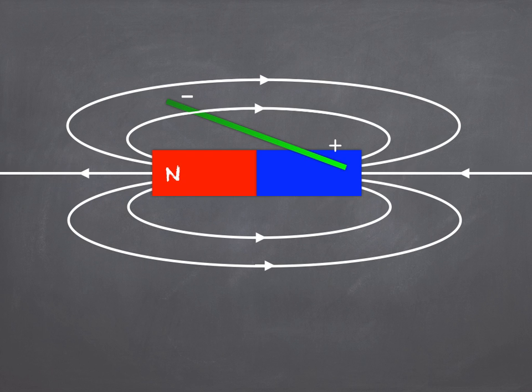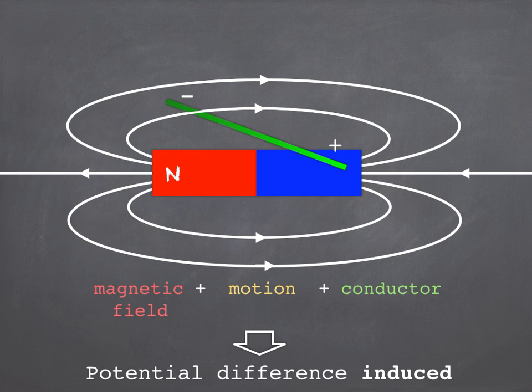So if you put together a magnetic field, movement or motion, and a conductor, then a potential difference gets induced in the wire, in the conductor. Do try to use the word induced in an exam if you can remember. It's often a way of picking up an extra mark.